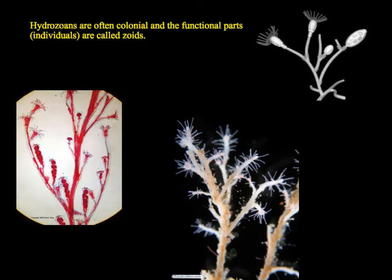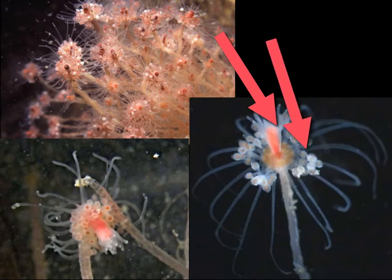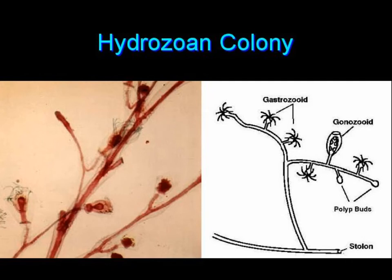These hydrozoans are colonial, and many of them have separate feeding parts and reproductive parts on the stalk working together to carry out the colonial life of the organism. Some hydrozoans have the feeding part and the reproductive part on the same polyp. We have special names for these: the gastrozoid — gastro meaning to eat — and the gonozoids, which are the reproductive polyps.